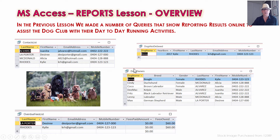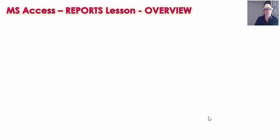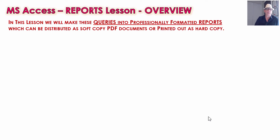We also had an overdue fees list of who hadn't paid their fees for the dog club and needed to be chased up because they owed some money. These four queries were great for running online, but we can make them a lot better by doing reports.